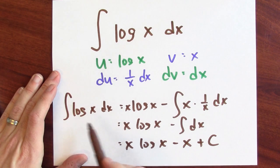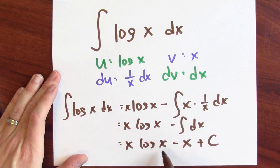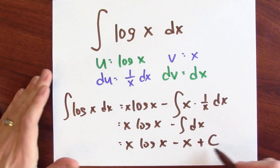So I'm claiming that the antiderivative of log x is x log x minus x plus some constant. I think it's really surprising that, at least in this case, dv equals dx is a great choice.